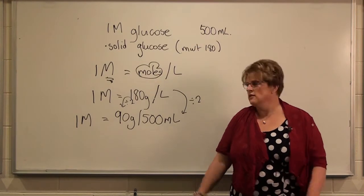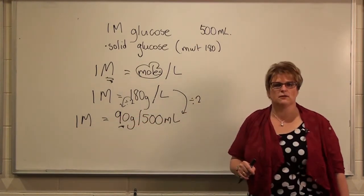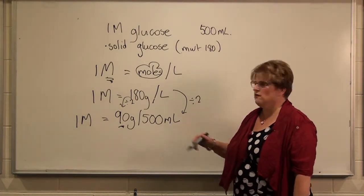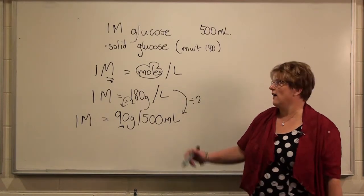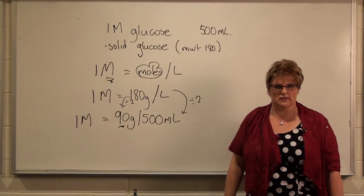So to make up our solution of glucose at one molar, we would weigh out 90 grams of glucose, and then add water up to a volume of 500 mils. And that would make our 500 mils of our one molar glucose solution.